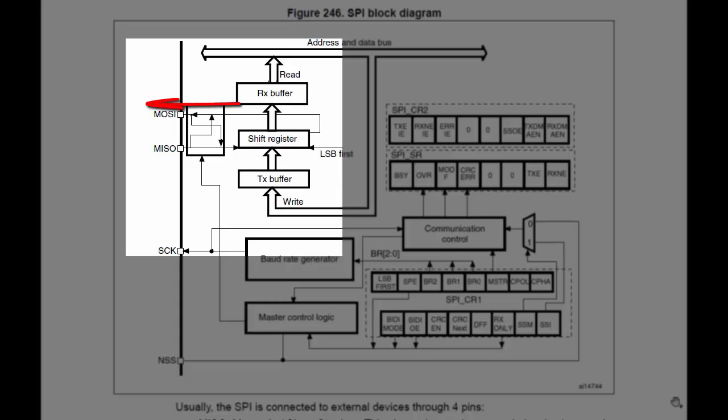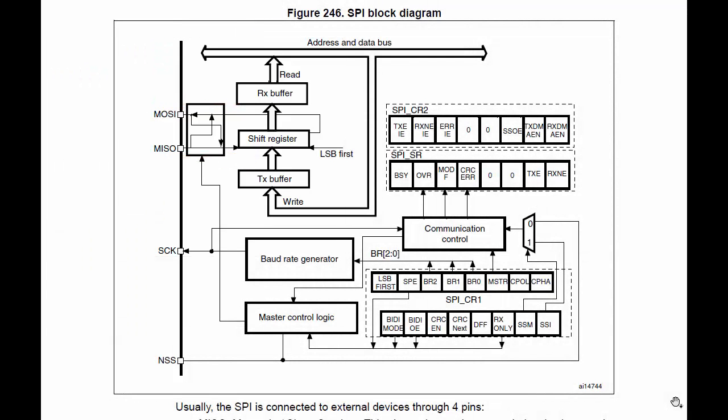If you observe carefully, you can see that if this is a master, then data is shifted out from this end over the MOSI line, and data will be shifted in through the MISO line. After that, we have a couple of control registers, CR1 and CR2, which are used to control the SPI operation.